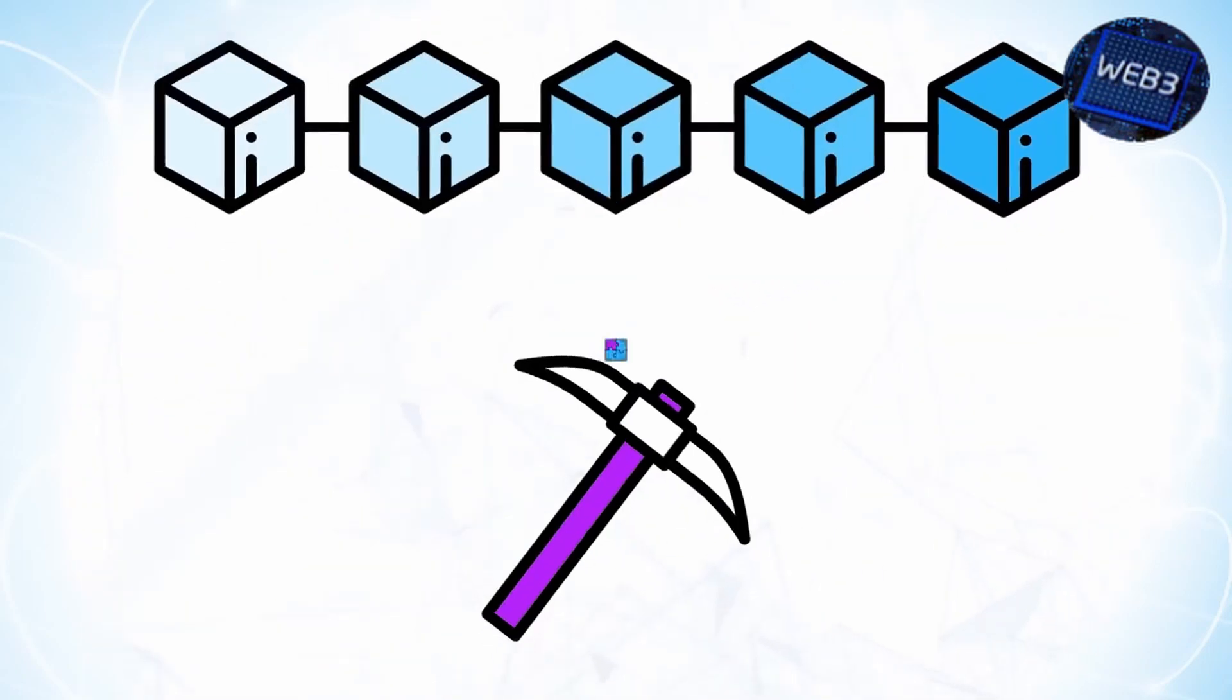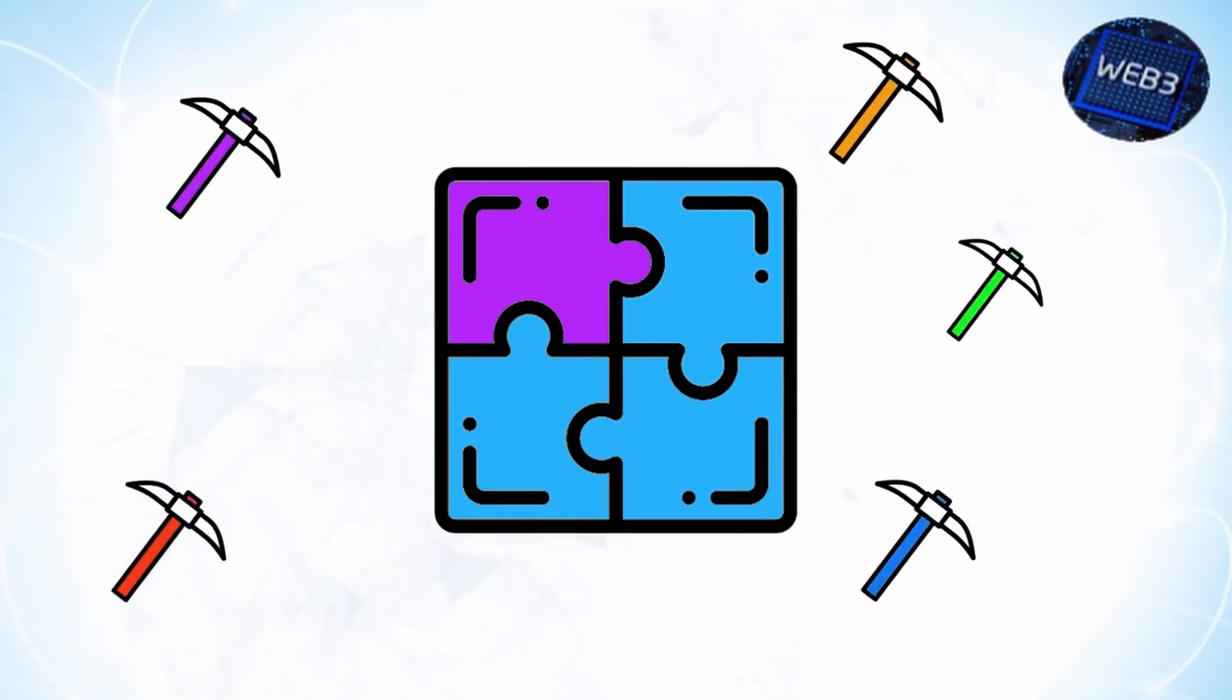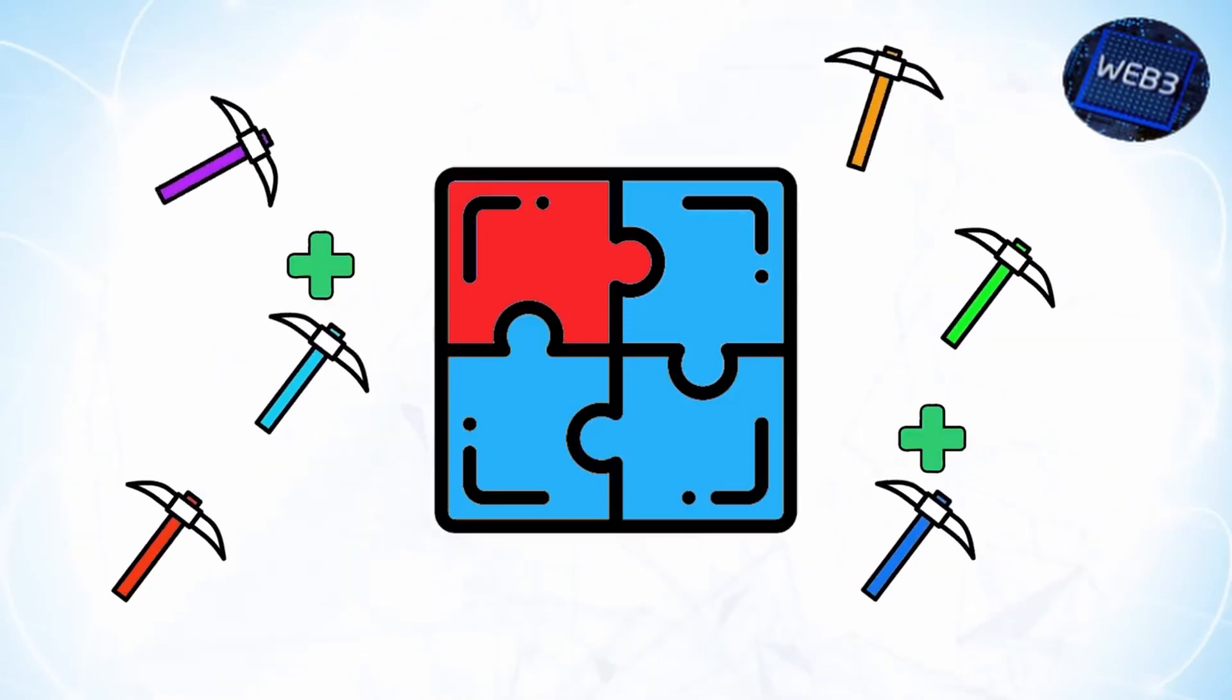The difficulty of this puzzle increases proportionally to the amount of computing power in the network that is working on the puzzles. The more miners there are, the more difficult the network makes it to verify transactions and earn the reward. The competitive nature of the difficulty increase incentivizes miners to optimize their ability to solve the puzzle, and thus, optimize their ability to verify transactions.